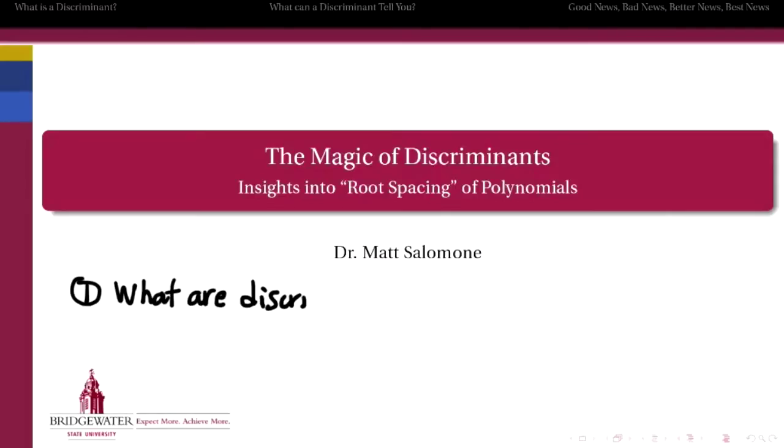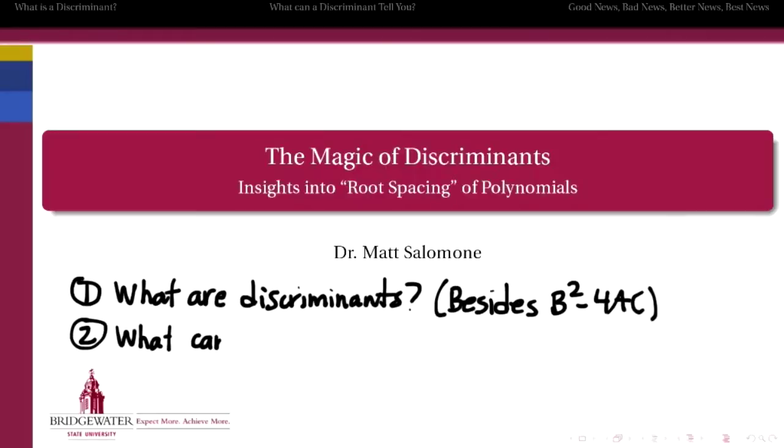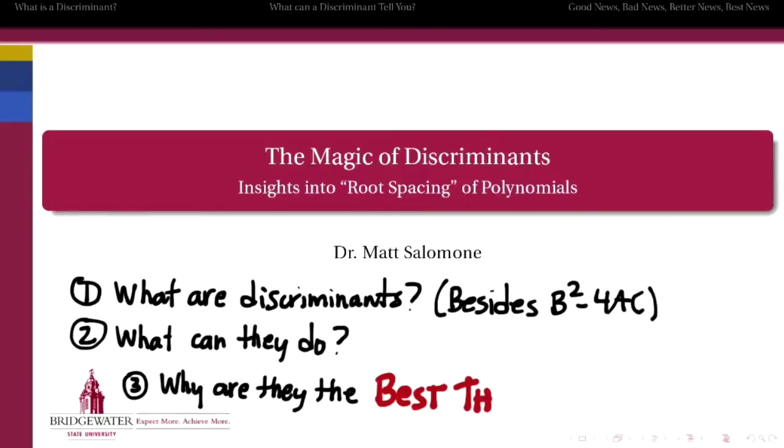So step one, what are discriminants in more generality, not just for quadratics and not just b squared minus 4ac? Second, what can discriminants tell us about the number and the nature of roots for a polynomial equation? And finally, why do I think that discriminants are pretty much the best things ever?